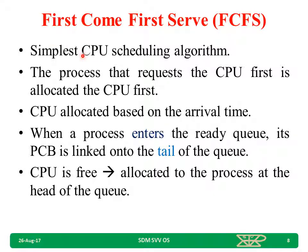First come first serve algorithm is the simplest — simple to understand and simple to implement. The concept is very simple: the process that requests the CPU first is allocated the CPU first. CPU is allocated based on arrival time. Whichever process has come early, that process will get the CPU early. When a process enters the ready queue, its PCB is linked onto the tail of the queue. Whenever the CPU is free, it is allocated to the process at the head of the queue.